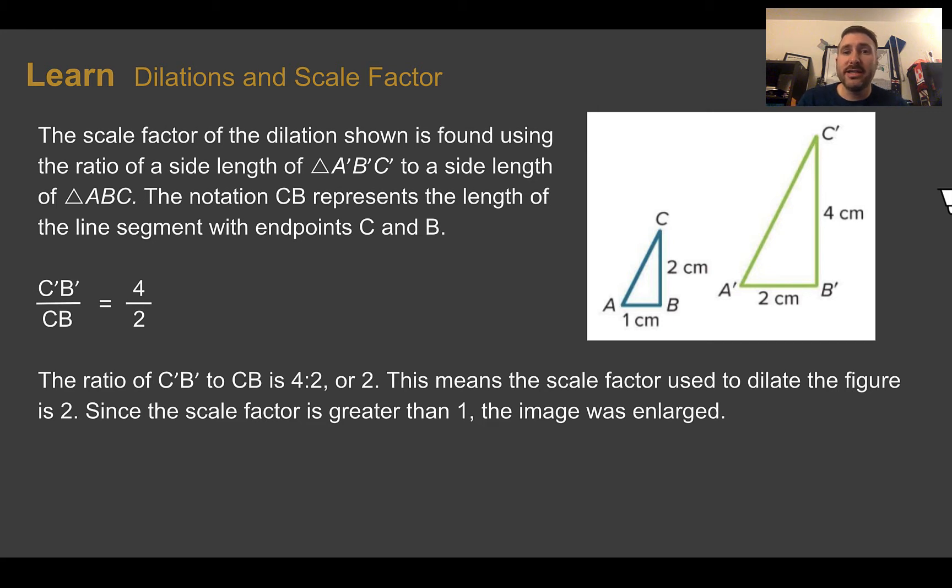If the scale factor is greater than 1, then the image will be enlarged. If the scale factor is between 0 and 1, then the image is reduced. And if the scale factor is exactly equal to 1, then the image will be the same size as the pre-image. The scale factor of the dilation shown is found using the ratio of a side length of triangle A'B'C' to a side length of ABC.